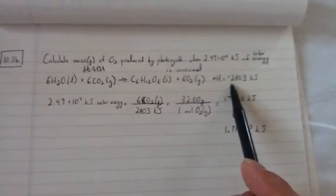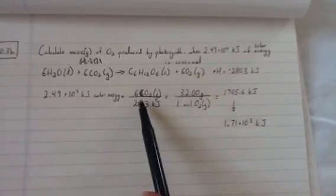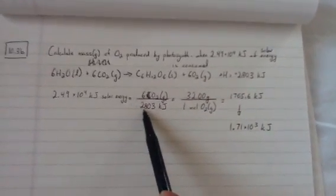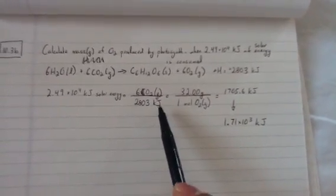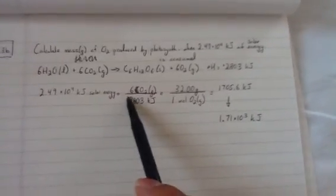We want to try to find out how much O2 is produced by photosynthesis. If we have a certain amount of energy, well, we know that for 2,803 kilojoules, we should be getting 6 O2 gases. So, we're going to put the 2,803 kilojoules on the bottom, because we want these units to cancel out.